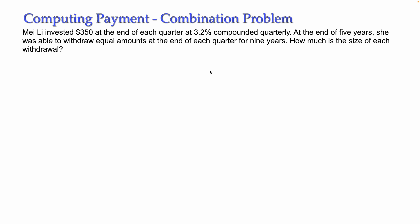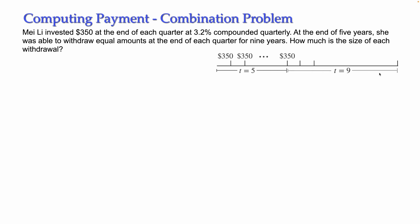The situation we have in this problem is this: there is an initial period of five years in which she is depositing $350, and this deposit is earning interest — it will have a future value at the end of that period. After this period she starts withdrawing the money, and this withdrawal period will be nine years.